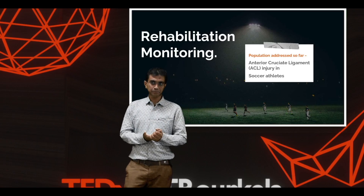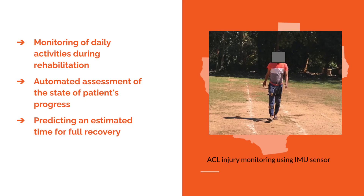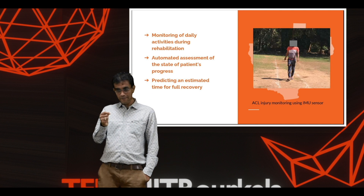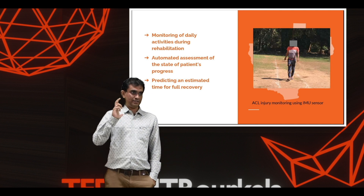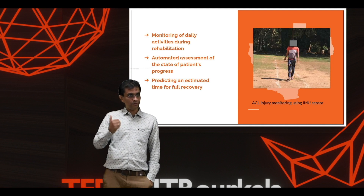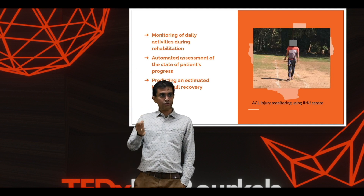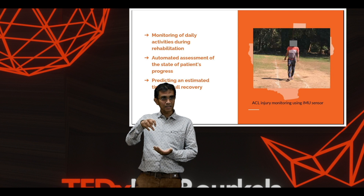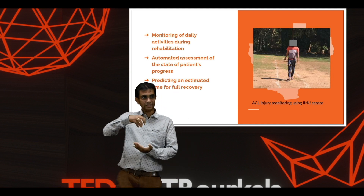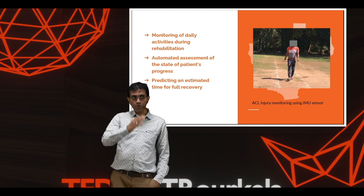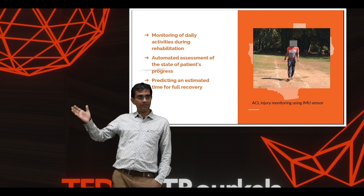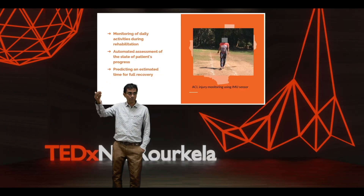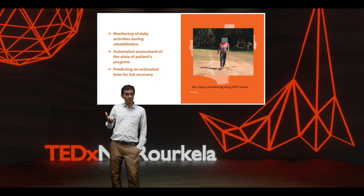The next portion is rehabilitation monitoring. We have worked on ACL injuries — anterior cruciate ligament injuries — which typically occur in super athletes. We captured athletic data from our institute by mounting IMU sensors. The process has three phases: data acquisition, data analysis to observe the progress of the patient's state using machine learning techniques, and prediction of how much time the athlete will take to recover, using temporal-based machine learning models.